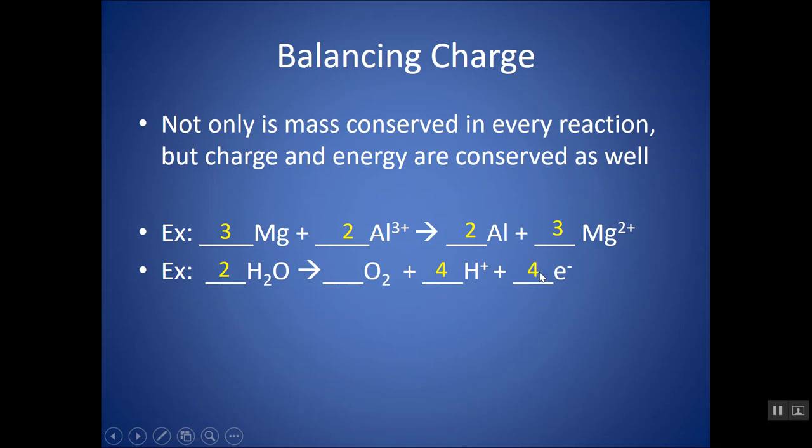So I would need to add, essentially, more electrons to balance this. So if I put four electrons here, the four minus and the four plus would cancel out to be zero on the right and zero on the left.